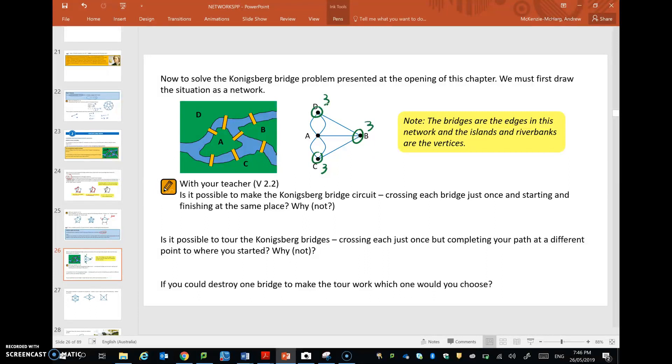The Eulerian circuit is not possible because there are odd vertices. An Eulerian path is not possible because you need to only have two odd vertices for that to be possible, and there are three odd vertices in this one. So that's how we can predict whether or not an Eulerian circuit or an Eulerian path is possible.